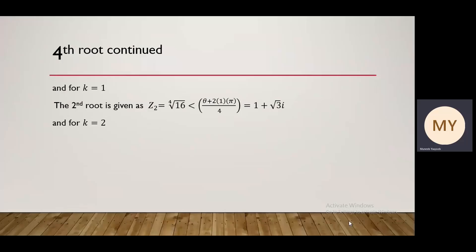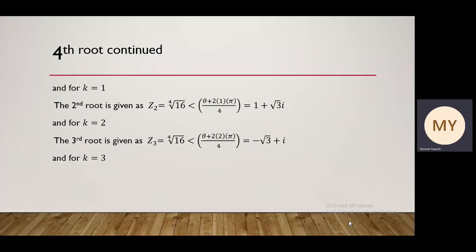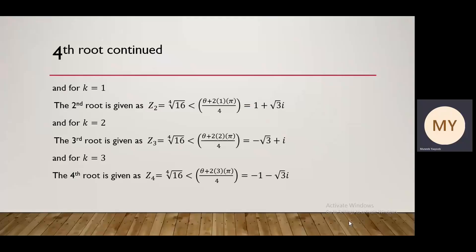For the third root k equals 2, z3 equals fourth root of 16, argument (theta plus 4 pi) divided by 4, giving minus root 3 plus i. For the fourth root k equals 3, z4 equals fourth root of 16, argument (theta plus 6 pi) divided by 4, giving minus 1 minus root 3 i.